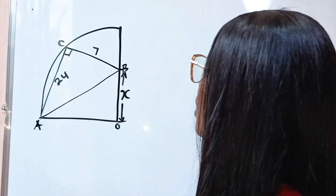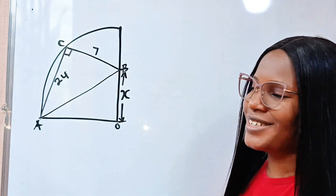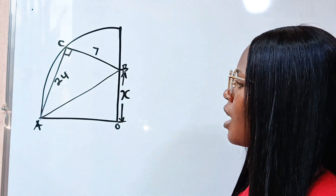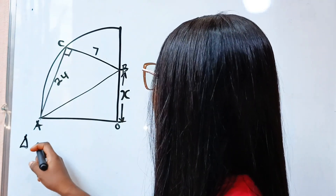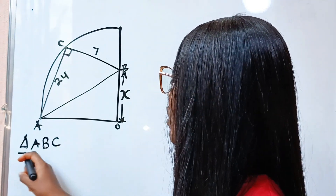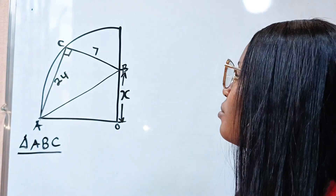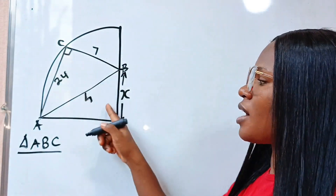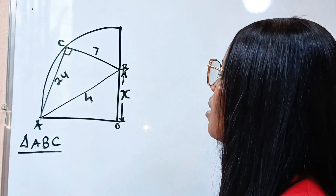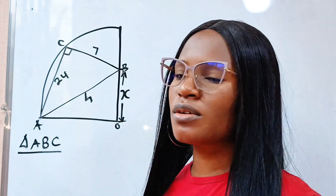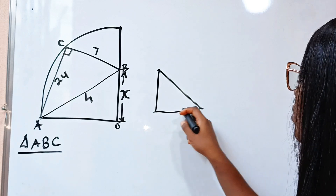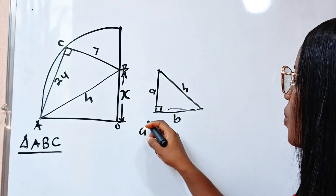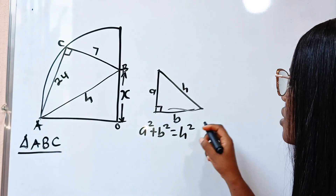If we connect A to B — this is a hand sketch, so it's not to scale — then in triangle ABC, AB is the hypotenuse. According to the Pythagorean theorem, in a right-angle triangle with hypotenuse H and sides A and B, A squared plus B squared equals H squared.